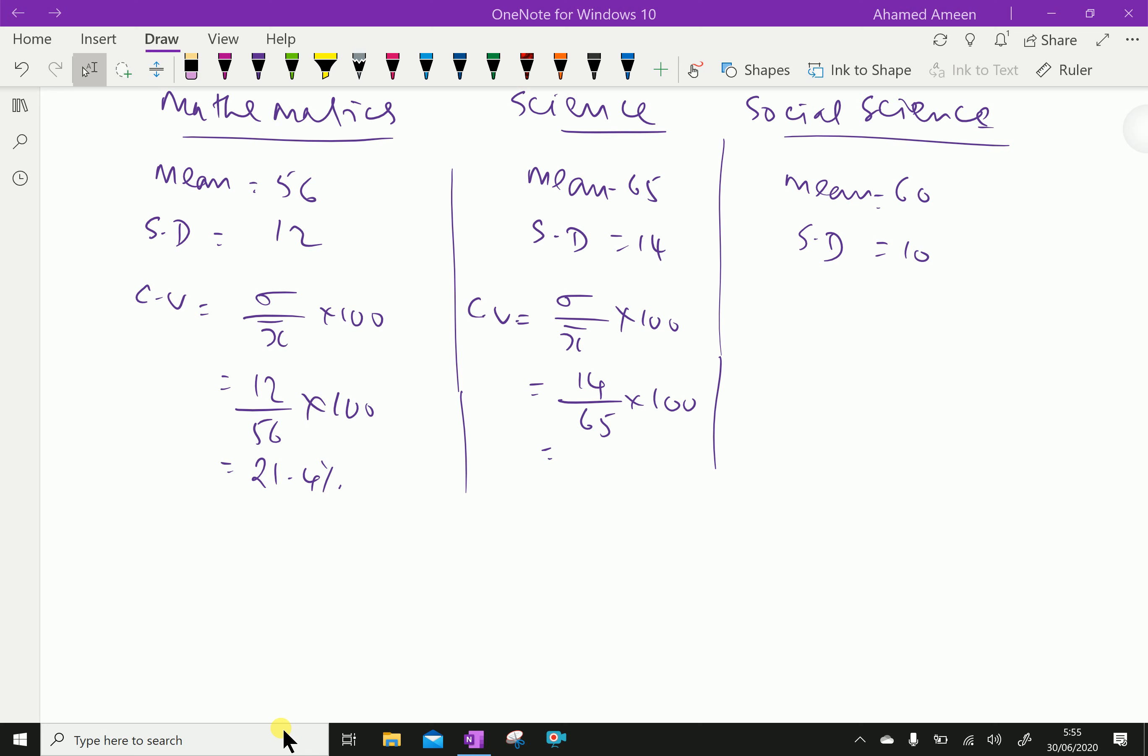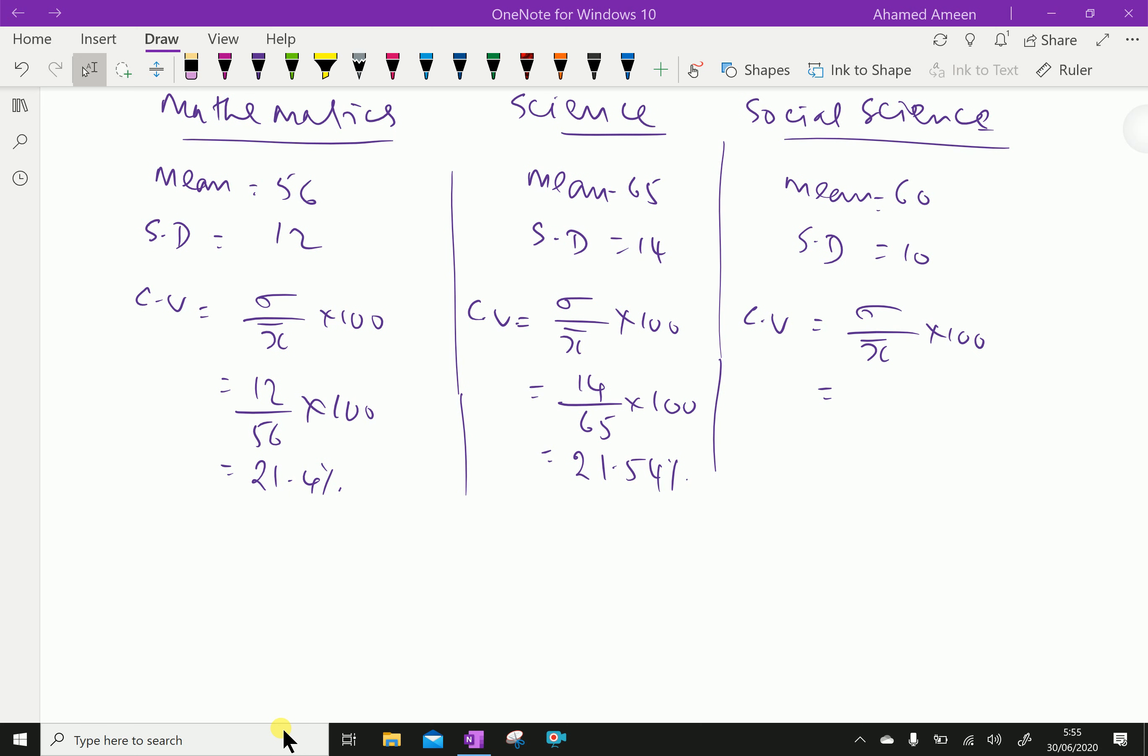For social science, coefficient of variation is sigma over x bar into 100. Sigma is 10 over x bar into 100, which gives 16.67 percent.